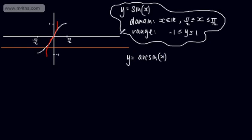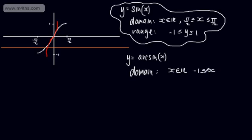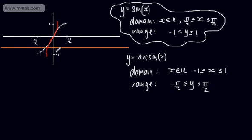With the inverse function, the domain of the original becomes the range of the inverse, and the range of the original becomes the domain. So for arcsin x, the domain is x is a real number between negative 1 and positive 1. The range is y between minus pi by 2 and positive pi by 2.